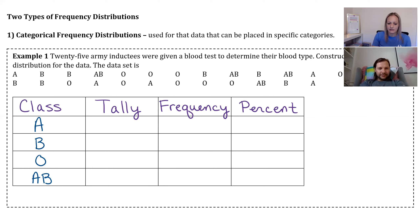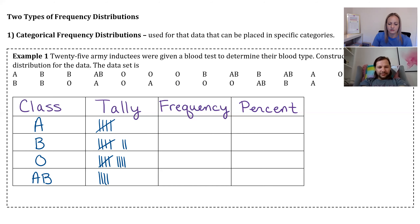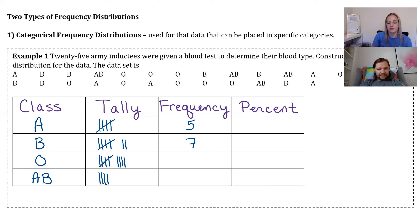The tally column is a place to keep track of how many of each category there are — how many A's, how many B's, how many O's, etc. It's a bit tedious; you go through all your data and count. The counts are: five A's, seven B's, nine O's, and four AB. Then in the frequency column, you write those same numbers: 5, 7, 9, and 4.